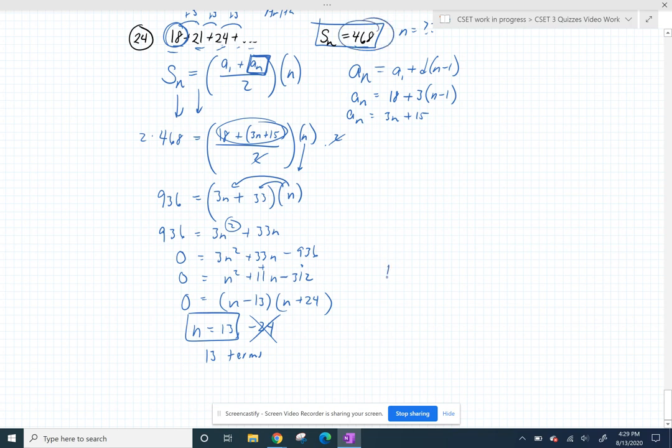If you didn't like that factoring, since it is a quadratic, quadratic formula is always there for you. Negative b plus or minus the square root of b squared minus 4 times a times c all over 2a. If you plug and chug that in, you'll get those same answers.